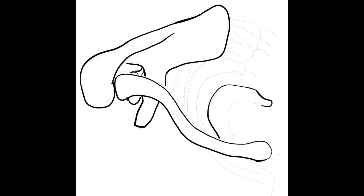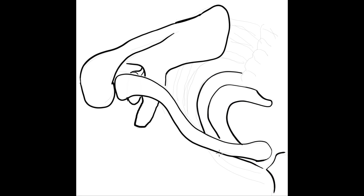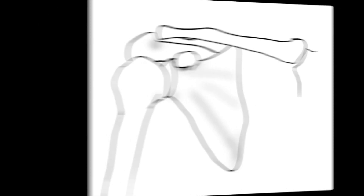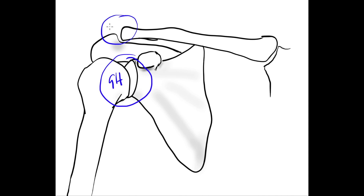The ribs and the scapula form the scapulothoracic joint, which participates in the movement of the shoulder girdle. The shoulder girdle consists of three synovial joints: the glenohumeral, acromioclavicular, and sternoclavicular joints.